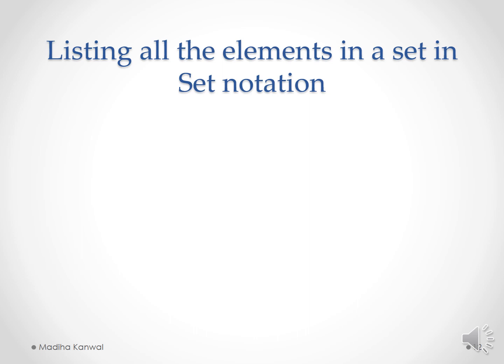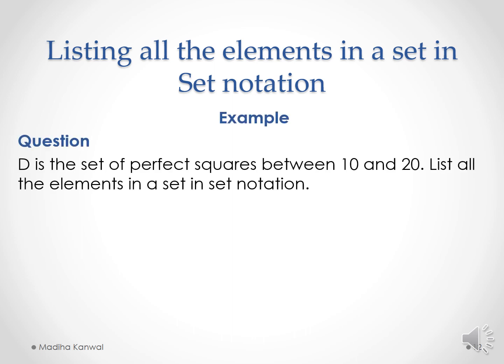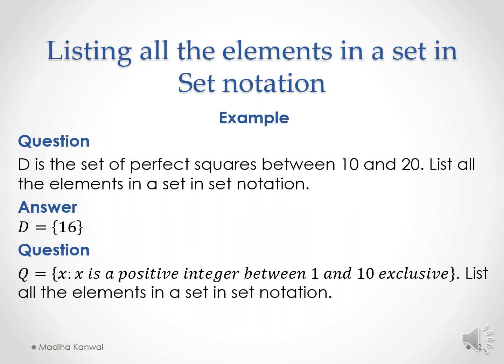The second way of describing a set is listing all the elements in set notation. For example, if D is the set of perfect squares between 10 and 20 and you are asked to list all elements in set notation, then the answer is D = {16}, since 16 is the perfect square of 4 and there is no other perfect square between 10 and 20. In another question, if Q = {x | x is a positive integer between 1 and 10 exclusive}, then Q = {2, 3, 4, 5, 6, 7, 8, 9}.